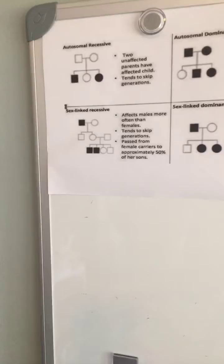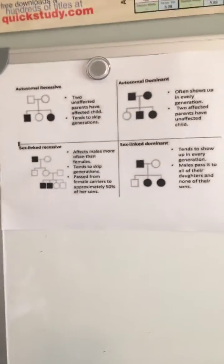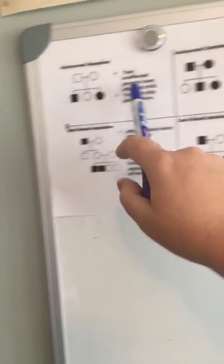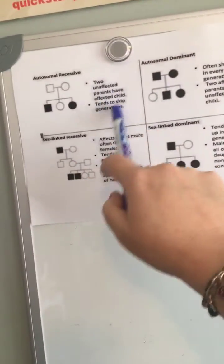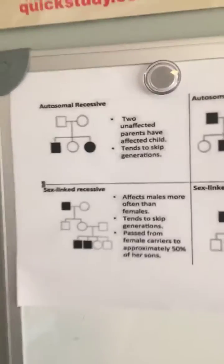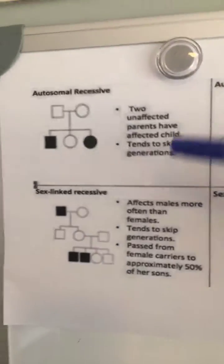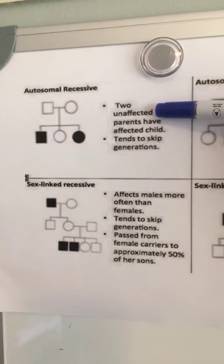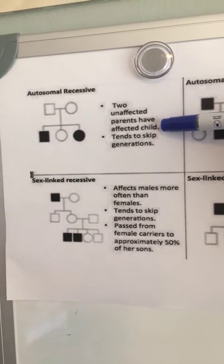Hello, it's Janet, your friendly biochem professor. Today we are going to talk about pedigrees. I have a chart I really like to use to break things down — not only is it a picture but it also has a fun little definition. For autosomal recessive, we're going to have two unaffected parents, it tends to skip generations, and they have an affected child.